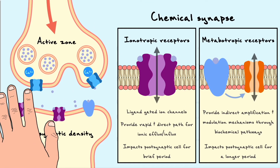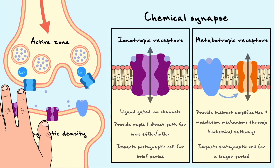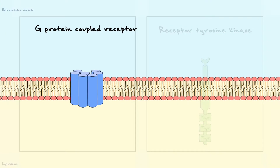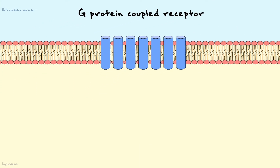In the brief introduction about chemical synapses, I've introduced metabotropic receptors as receptors that have indirect effects on the cell through biochemical signaling pathways, and that their effects can last considerably longer relative to ionotropic receptors. In this video, we will go over two major families of metabotropic receptors: the G-protein coupled receptors and the receptor tyrosine kinase. By examining these two classes, we will be able to understand how amplification and modulation occurs in neurons. Let's first cover the G-protein coupled receptors, or simply GPCRs.